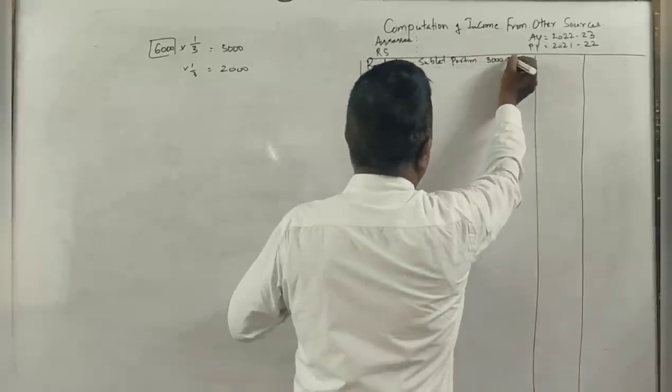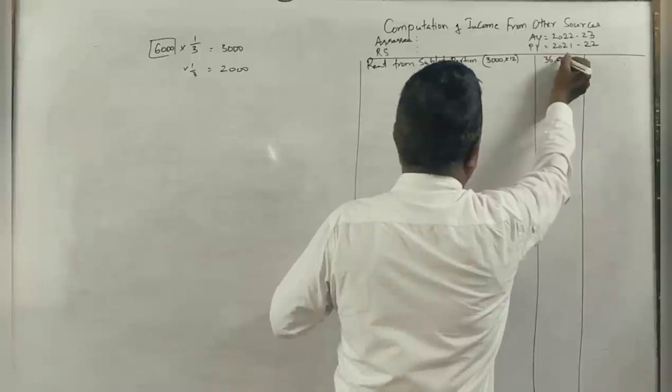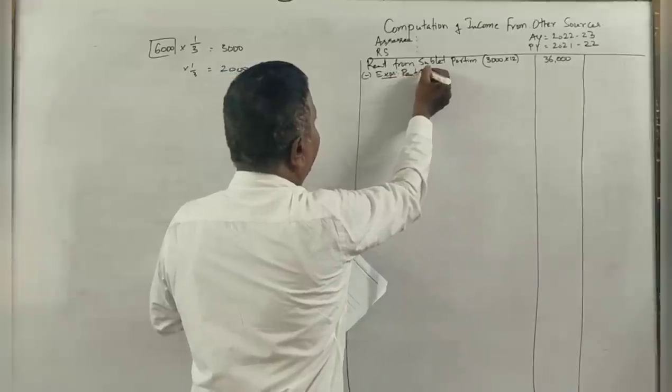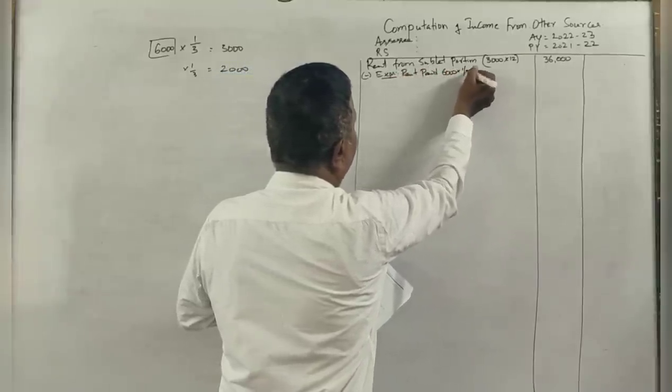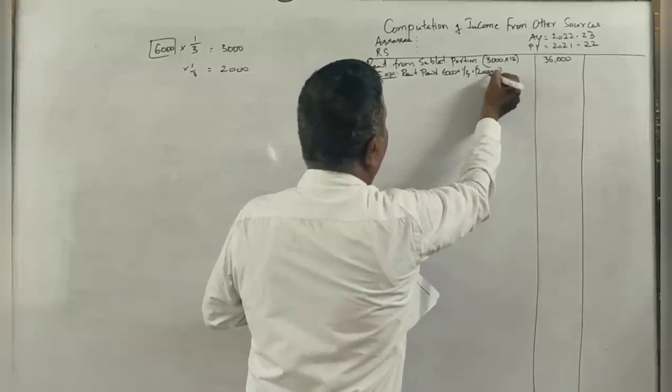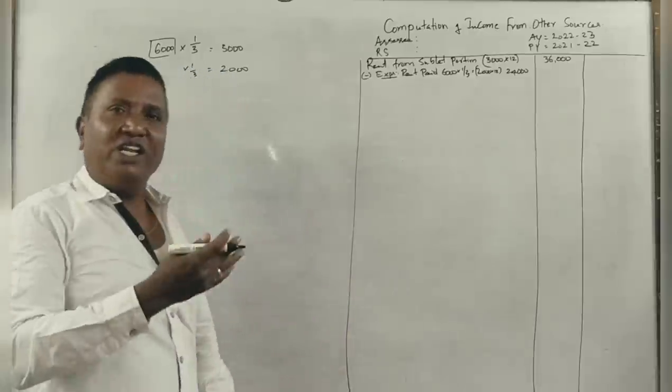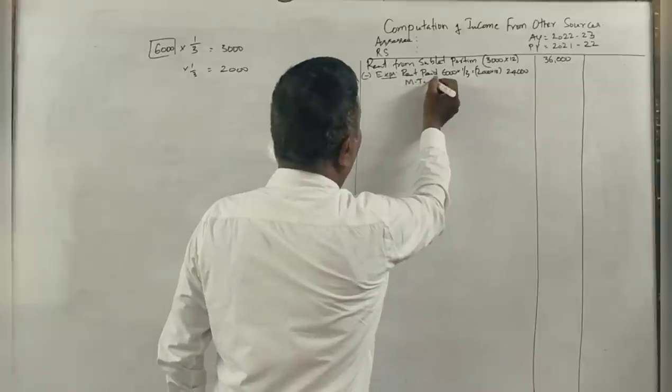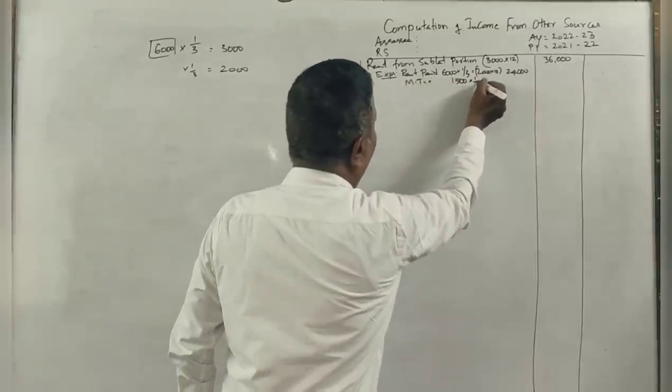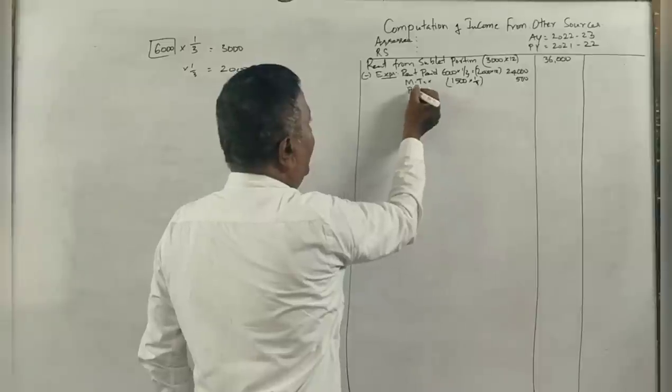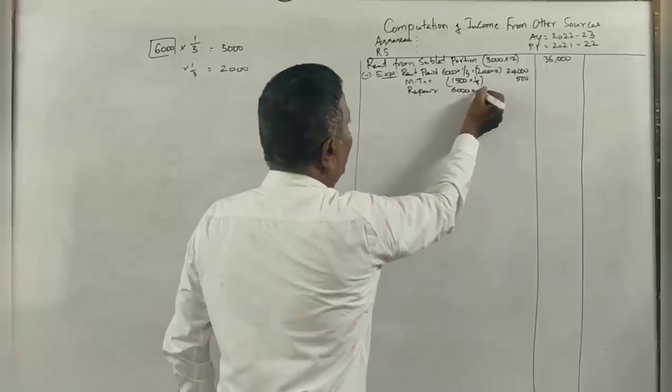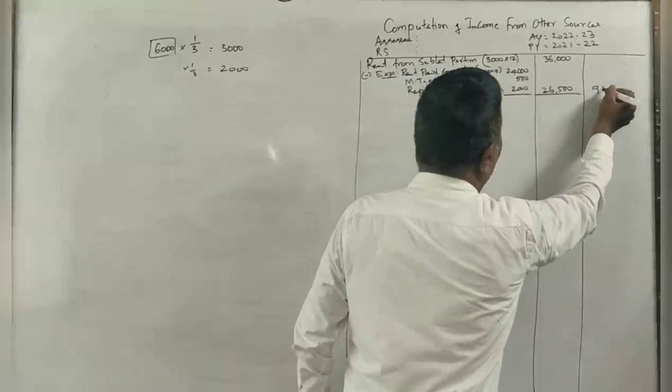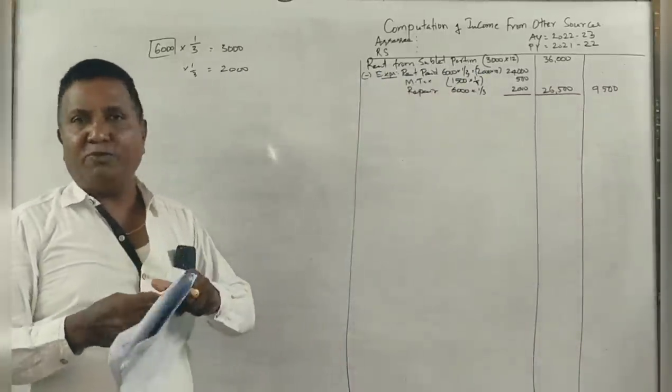The sublet portion receives 3,000 into 12 months, total rent is 36,000. He pays the original owner 6,000 per month, one-third is 2,000, into 12 is 24,000. Municipal taxes are 1,500, one-third portion is 500. Repair expenses of 6,000, for one-third portion is 2,000. Total expenses are 26,500. He is getting an additional income of 9,500 for subletting the house property.